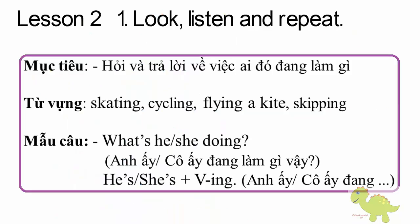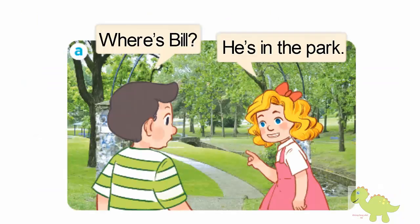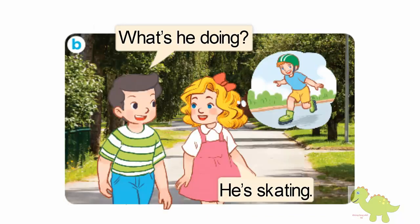Page 60, Lesson 2, Activity 1. Look, listen and repeat. A. Where's Bill? He's in the park. B. What's he doing? He's skating.